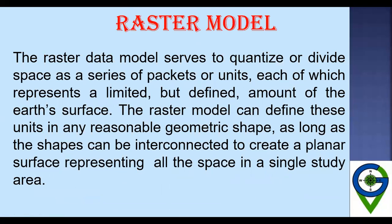The raster data model serves to quantize or divide space as a series of packets or units, each representing a limited but defined amount of area. The raster data model divides geographic space into a regular grid of cells in a specific row and column structure. In a traditional raster image, the x-axis is the column indicator and the y-axis is the row indicator. Not only geographic data but other pictorial data — such as a digital photograph — can also be represented and stored in a computer as a raster.